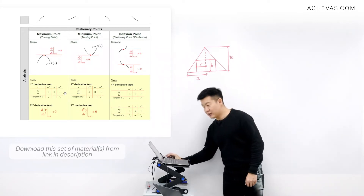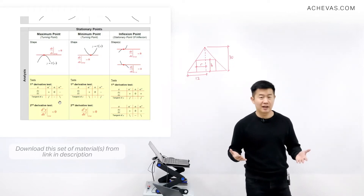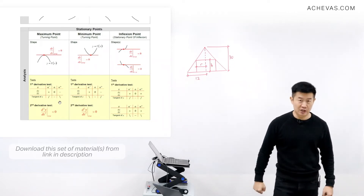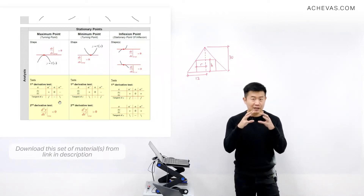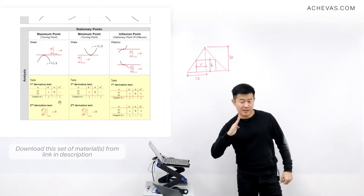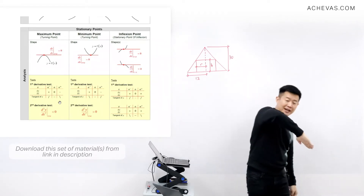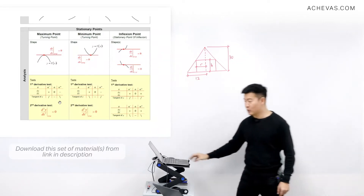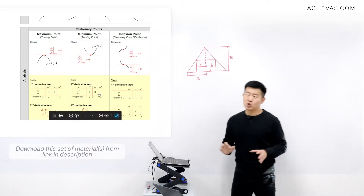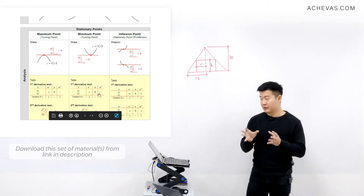For the first derivative test, we use dy/dx to analyse the slope of the tangent. If we find that before the turning point the slope is positive, at the turning point the gradient is zero, and after the turning point the slope is negative, then we know it is a maximum point. The same logic applies for identifying a minimum point.